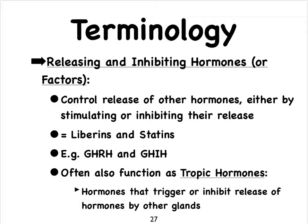Also, a little bit of terminology before we get going. The hypothalamus produces hormones as well, and its hormones often end in either 'releasing hormone' or 'inhibiting hormone,' and sometimes the term 'hormone' is replaced with 'factor.' For instance, the hypothalamus produces Growth Hormone Releasing Hormone, Growth Hormone Inhibitory Hormone, and Thyroid Hormone Releasing Hormone.